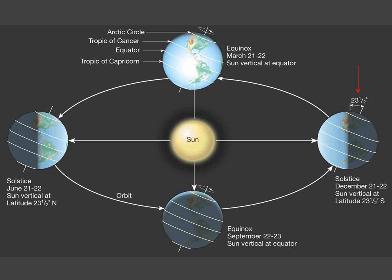On the day of the Northern Hemisphere winter solstice, the North Pole is tilted 23.5 degrees away from the sun. The sun shines more directly on the Southern Hemisphere and indirectly on the Northern Hemisphere. This tilt also results in shorter days for the Northern Hemisphere, and it becomes colder than the Southern Hemisphere, which experiences summer this time of year.